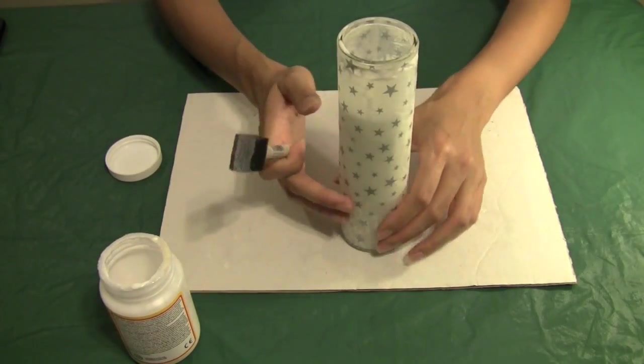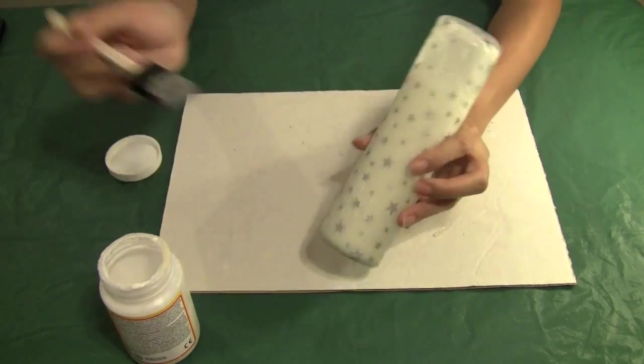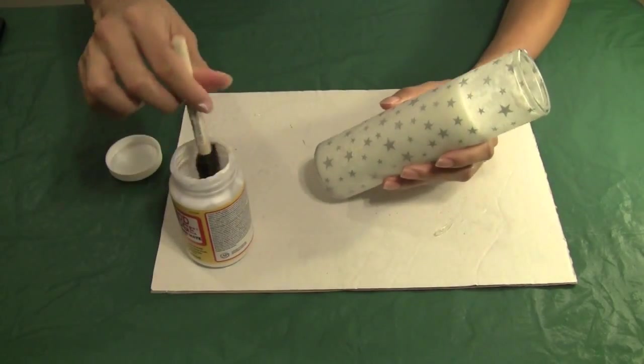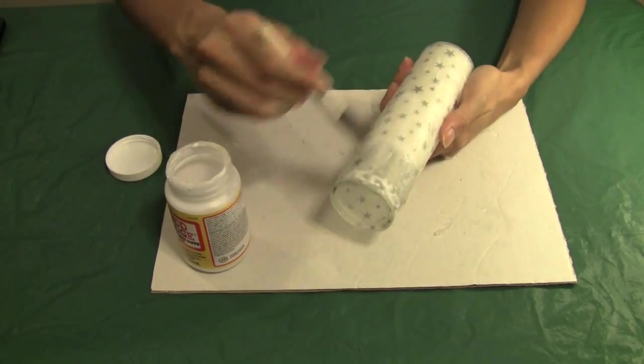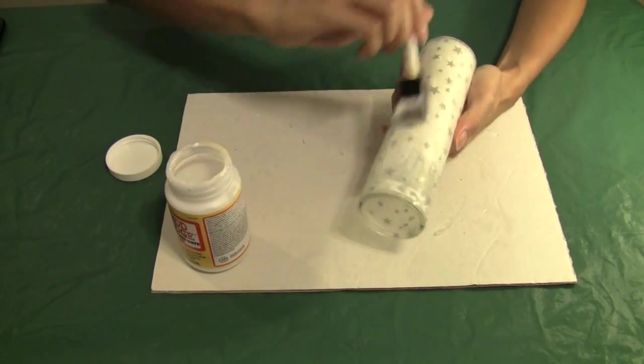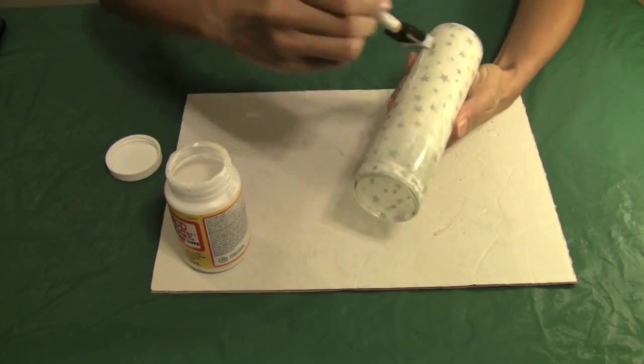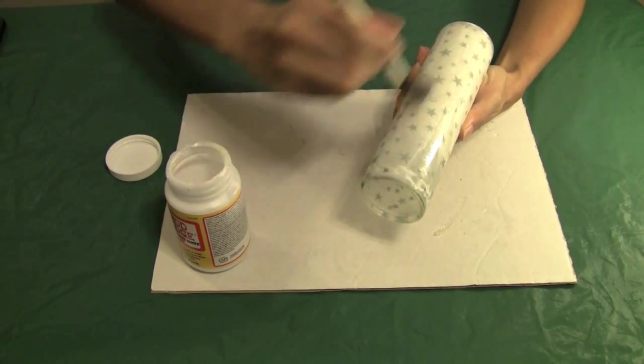I've worked out most of the air bubbles out of my candle here. So now, last step, we will add another layer of Mod Podge just right over the top of the candle just to seal in this paper and give it a nice finish.